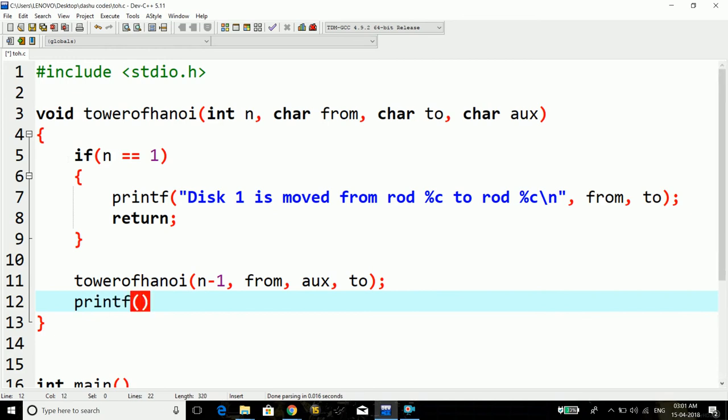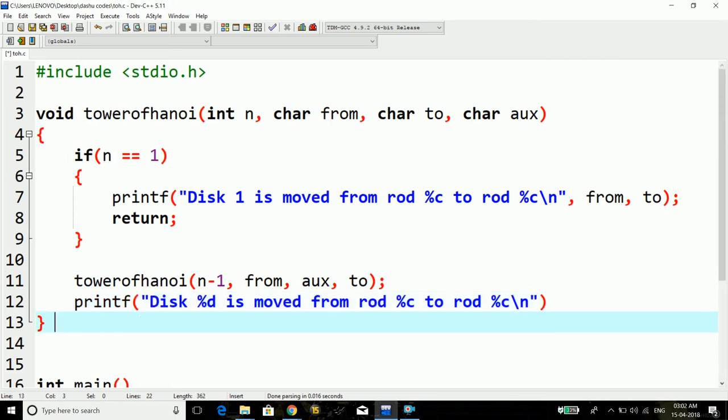And here, I'll print down a message that disk %d is moved from rod %c to rod %c and new line. And here, these will be n, from, and to.